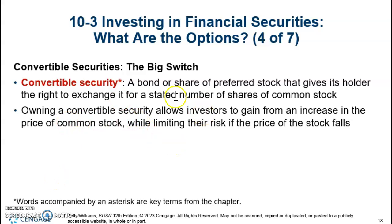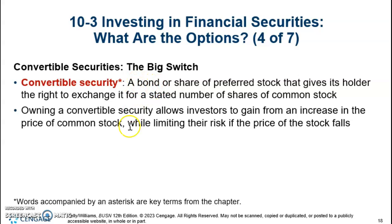Convertible securities are bonds or preferred stock shares that can be converted to common stock. This is a good feature for an investor because they can hold the bond and, when they see the price of the stock rising, they may want to convert it. For the company that issues the bond, when investors convert to common stock, the company no longer has to pay interest on the bond, saving some interest. However, existing stockholders may not like this because more common stockholders would dilute their share of ownership.